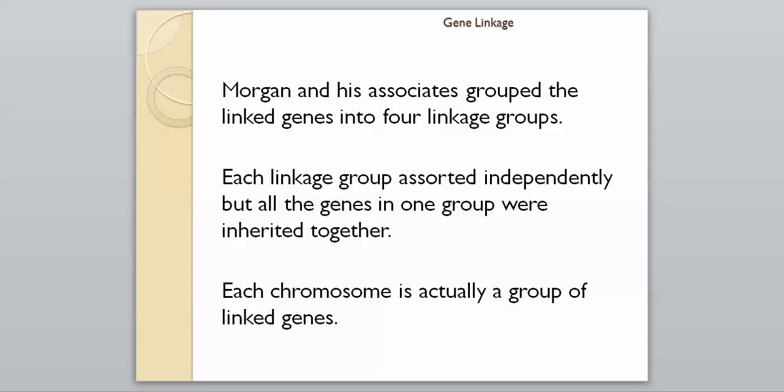Morgan and his associates grouped these linked genes into four linkage groups. Each linkage group assorted independently, but all the genes within one group were inherited together. Inside the fruit fly there were four distinct groups of genes — these groups all separated on their own, but individual genes within a group were inherited together. Some genes were so close to one another that they were always passed on together. Each chromosome is actually a group of linked genes.